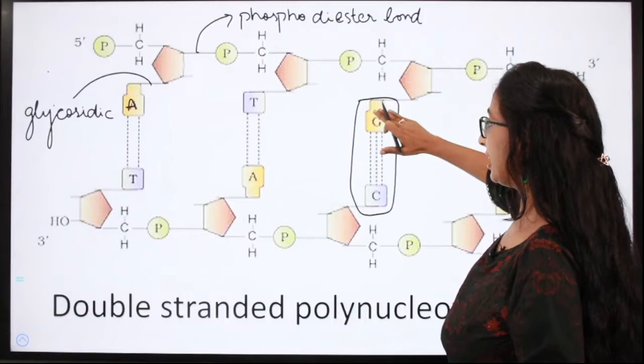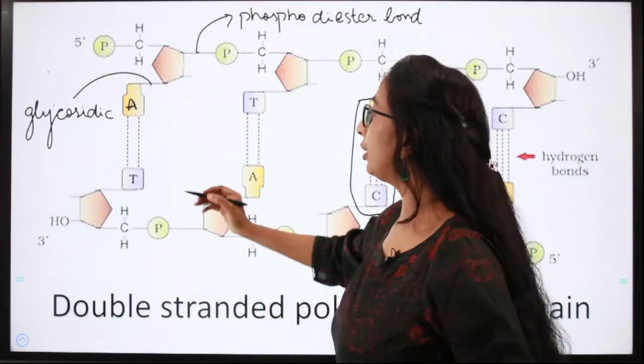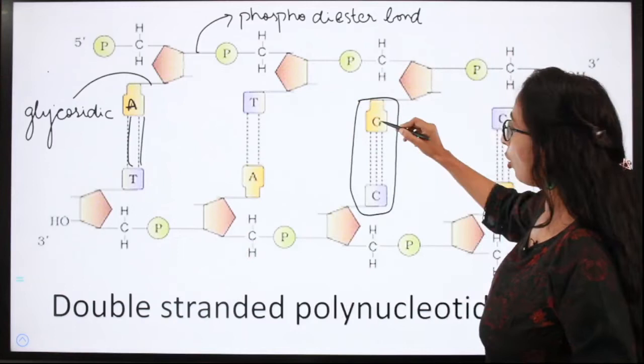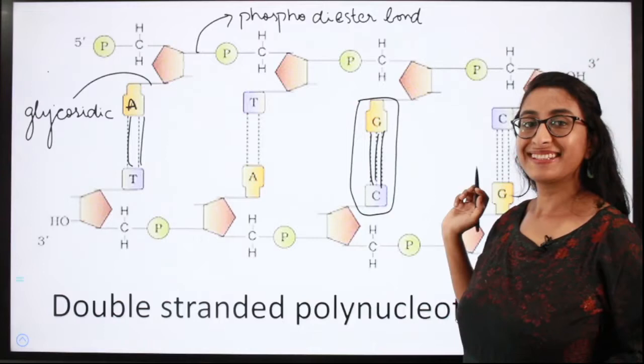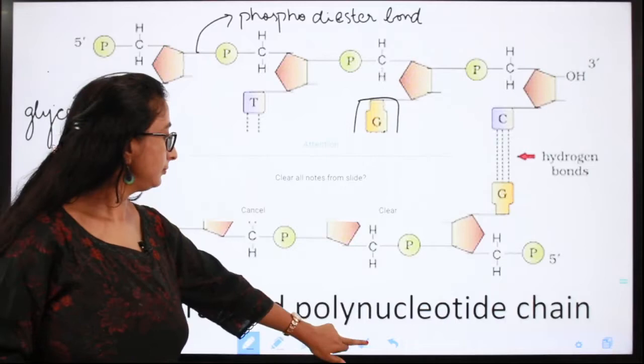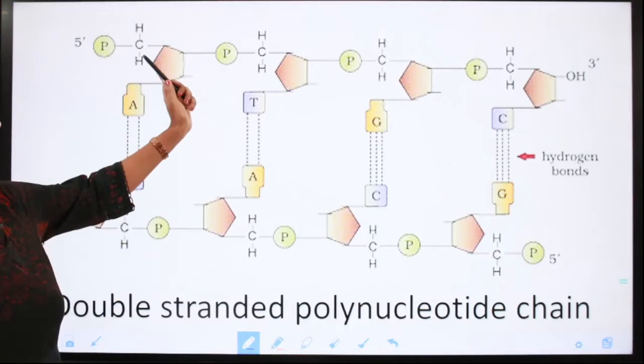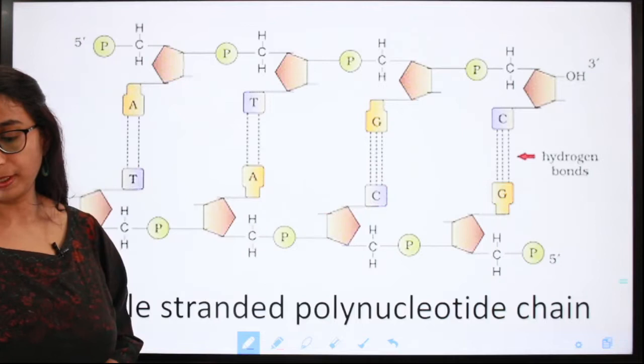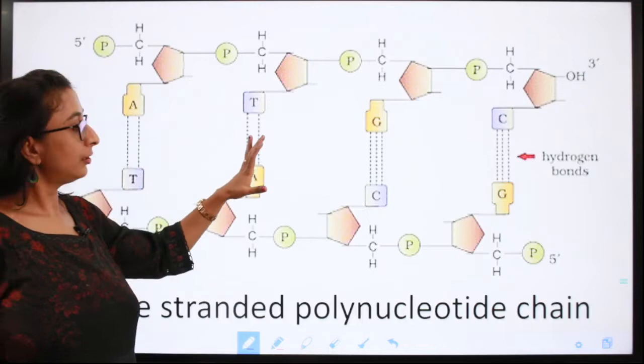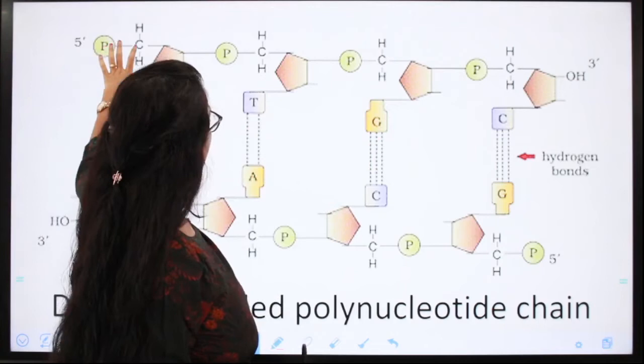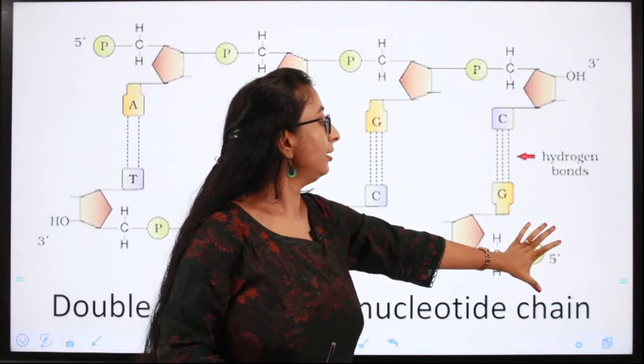Adenine always base pairs with thymine with two hydrogen bonds, and guanine always base pairs with cytosine with three hydrogen bonds. So the three bonds in DNA are glycosidic bonds, phosphodiester bonds, and hydrogen bonds. This is how a double-stranded DNA molecule looks — a double-stranded polynucleotide chain, with one strand running 5' to 3' and the other in 3' to 5' direction.